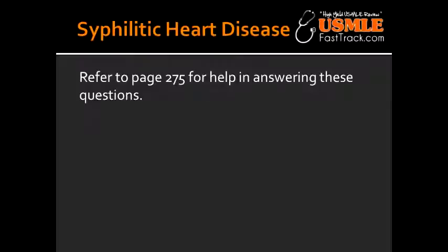In syphilitic heart disease, the term given to describe the appearance of the aorta is known as the tree bark appearance. Complications include aneurysms of the ascending aorta or the aortic arch, and can lead to aortic insufficiency.